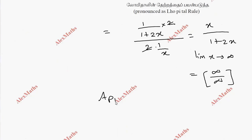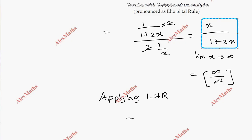Applying L'Hôpital's rule again, the derivative of the numerator x is 1, and the derivative of the denominator (1 + 2x) is 2. So numerator over denominator gives 1/2.